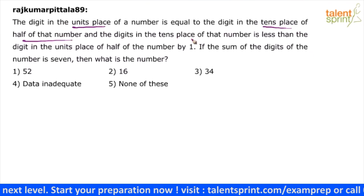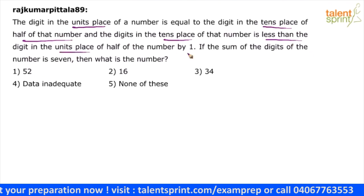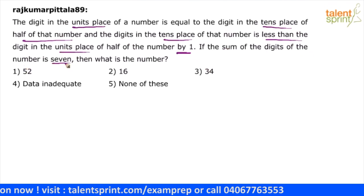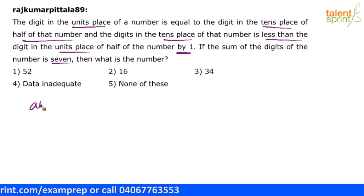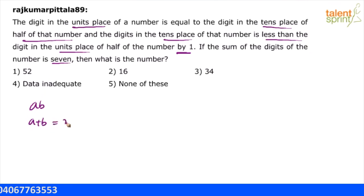The tens place of this number is less than the units place of half of the number by 1. If the sum of the digits of the number is 7, then what is the number? One more condition given to us is sum of the digits of the number is 7. So let us say the two-digit number is AB. A plus B equals 7 — that is one condition. This is the easiest condition to verify, so let us check this condition first.